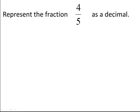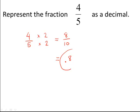Represent the fraction 4/5 as a decimal. We can convert 4/5 to a fraction with a denominator of 10 if I multiply both the numerator and denominator by 2. 4/5 is equivalent to 8/10. Written this way, it's easy to see that the decimal equivalent of our fraction is 8 tenths or 0.8.